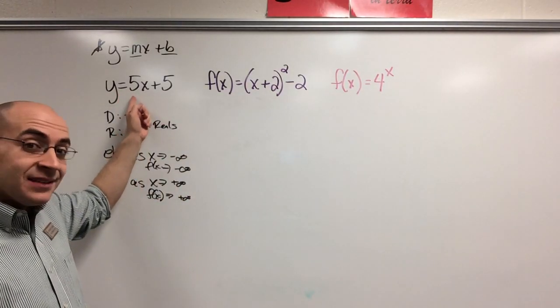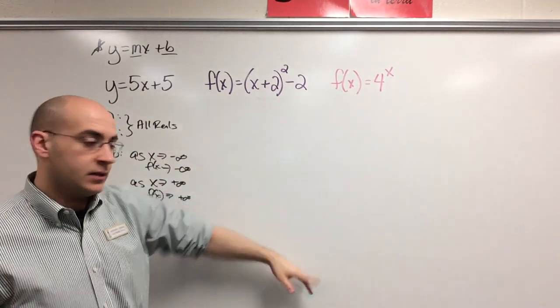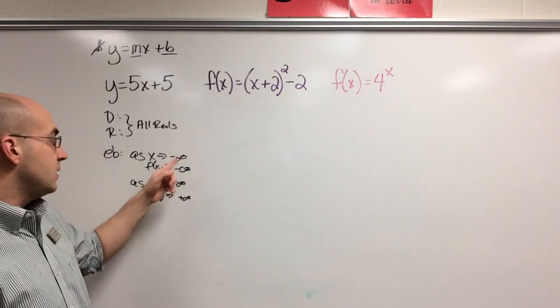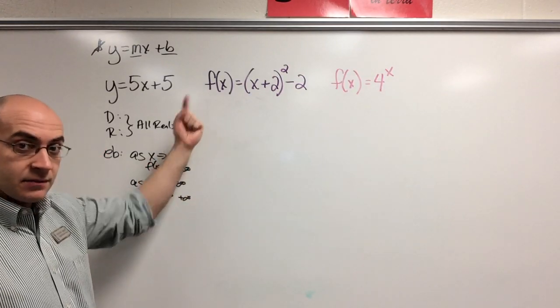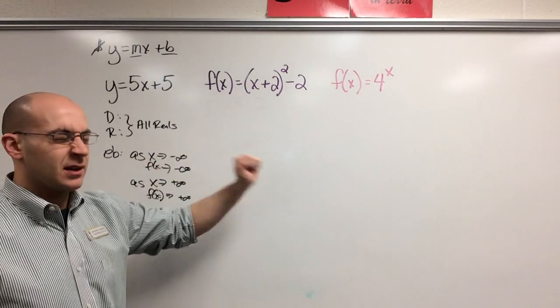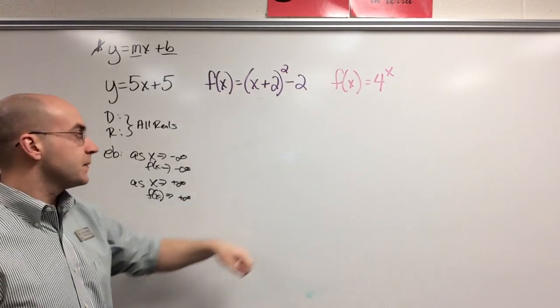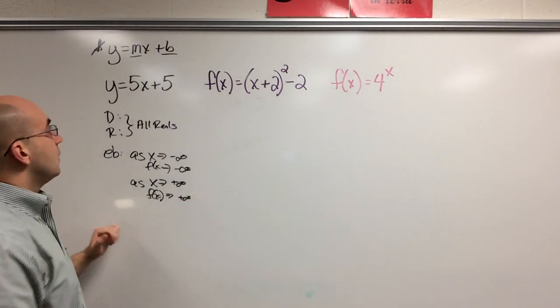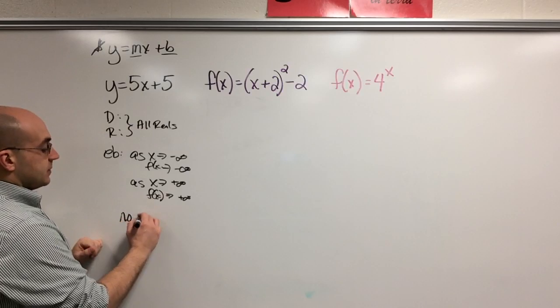Now, if this was y equals negative 5x plus 5, it would go downhill and this would be reversed. As it approaches negative infinity, it would approach positive, and as it approaches positive infinity, it would approach negative.